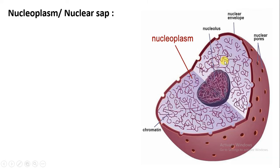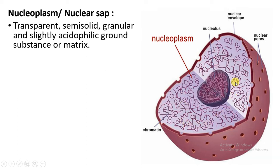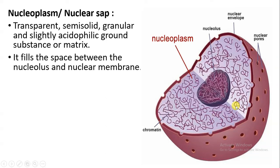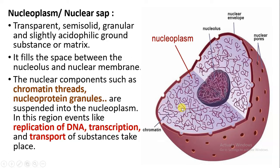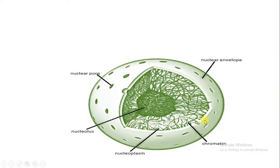Nucleoplasm: as you can see in this diagram, this region is the nucleoplasm or nuclear sap. It is transparent, semi-solid, and granular in nature. It is acidic because of the presence of DNA, which has a phosphate group, making it acidic. This space is filled between the nucleolus and the nuclear membrane. Nuclear components such as chromatin threads, nucleoprotein granules like histones are present, and a number of events take place here including replication of DNA, transcription, and transport of material.